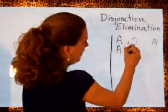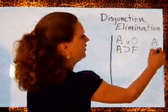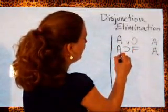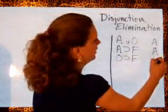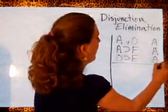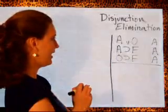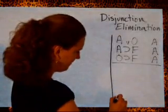If A, then F, that's another assumption, and if O, then F, that's our third assumption. And the conclusion we want to get to is F.